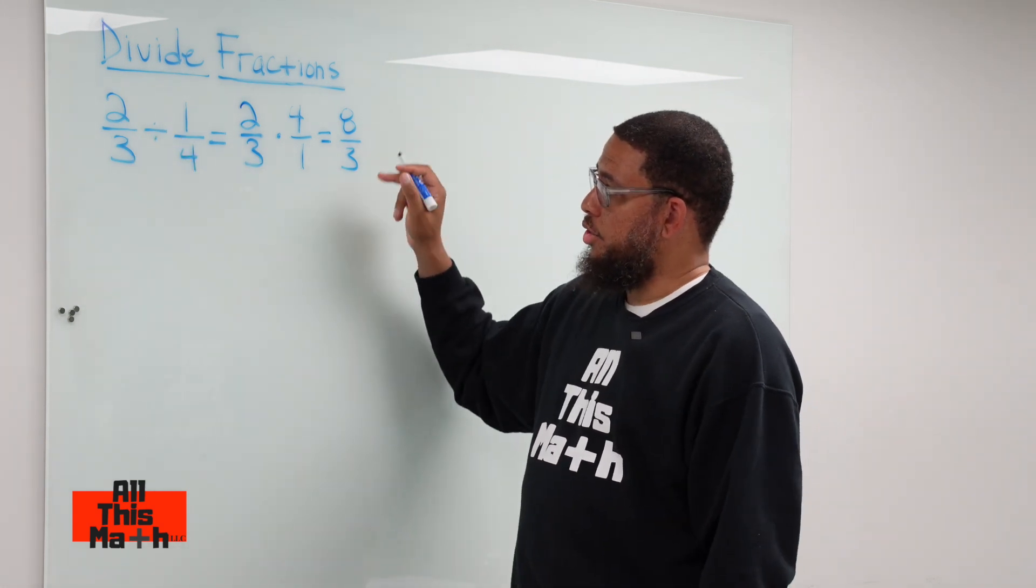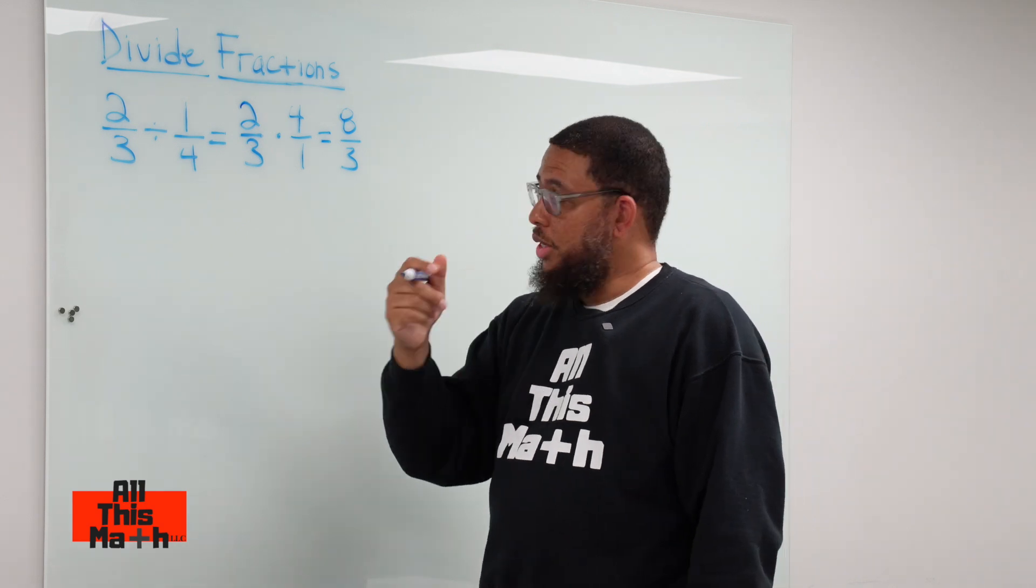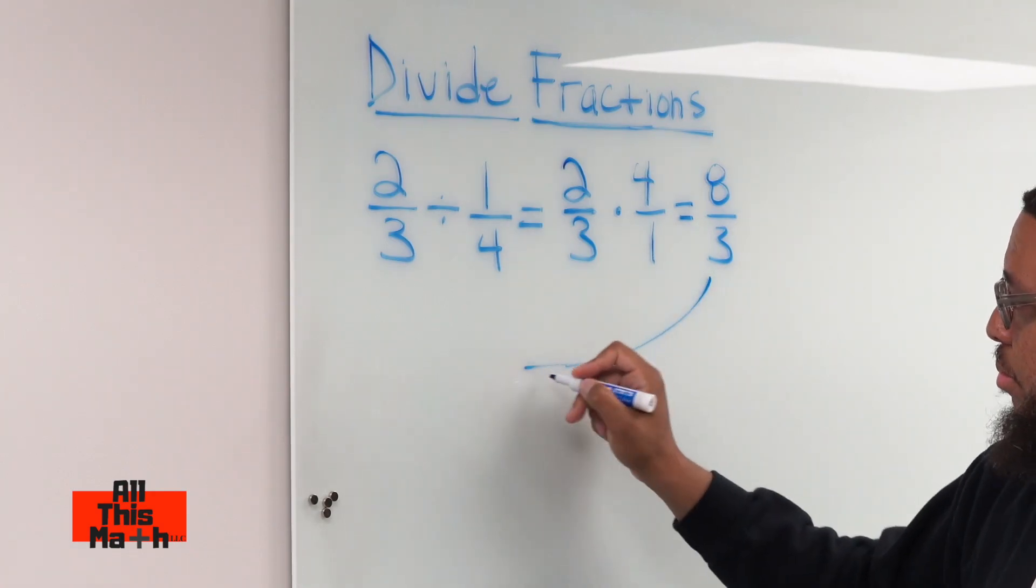So it makes sense that we're going to get eight-thirds, and eight-thirds is an improper fraction which is something we can actually convert into a mixed number.